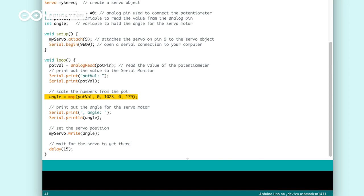In the map function, first we have the variable potval, which is the value we receive from the potentiometer and the number to be scaled. Then we have the minimum and maximum values we can send to the servo.